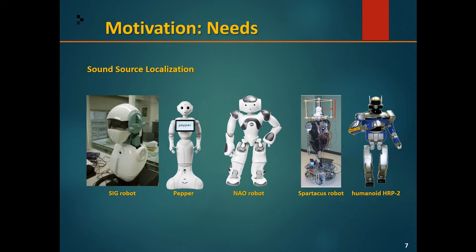The SIG robot on the left was a humanoid robot built to promote audition as a basic skill for robots in 2000. Initially there wasn't much interest in sound source localization in robotics or AI. However, with the appearance of the SIG robot, study in sound source localization became popular. There were studies before this, but the SIG robot is why they became widely adopted.